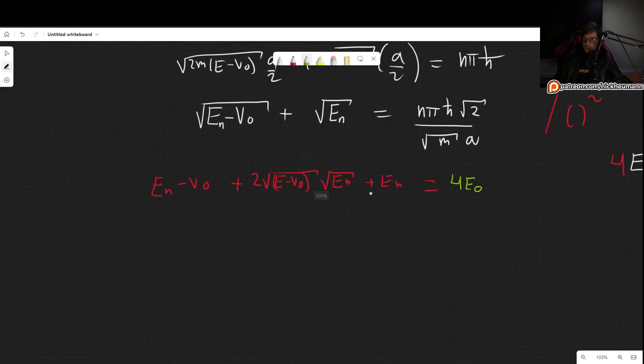Alright, so that simplifies notation. Now notice we have two of these ENs, so we can get rid of this one. And now we still have square roots, so let's leave this square root alone. So 2 square root of (E minus V0)EN, square root of EN, this is equal to 4 times E0 minus 2EN and then plus V0.